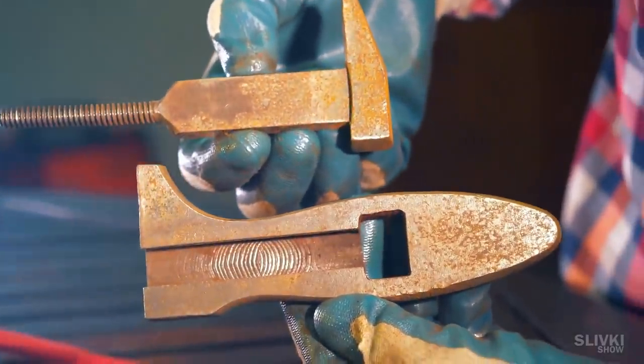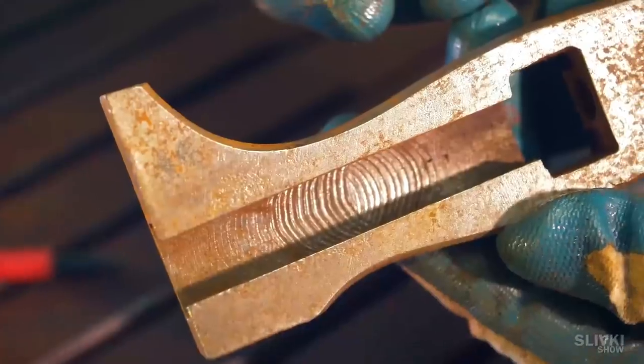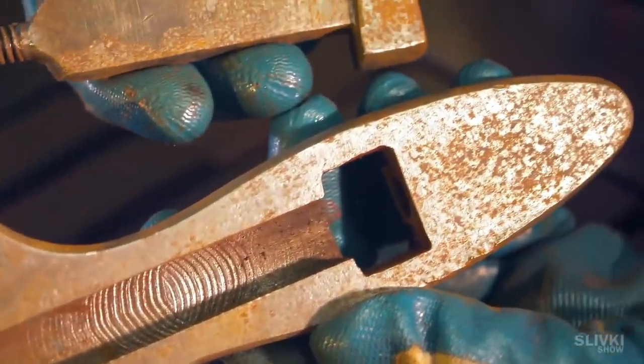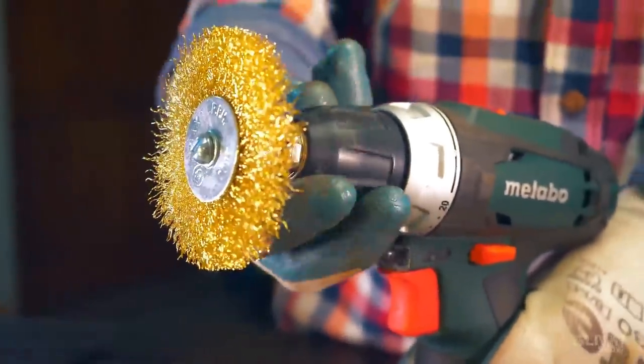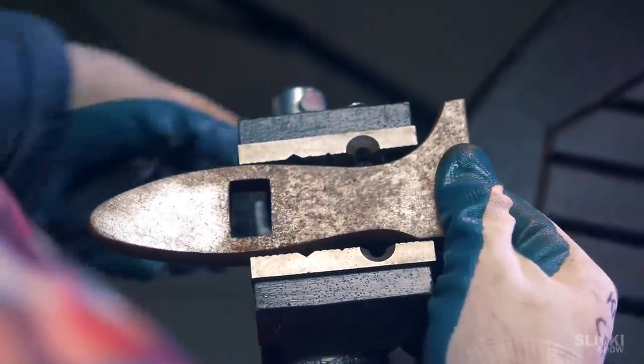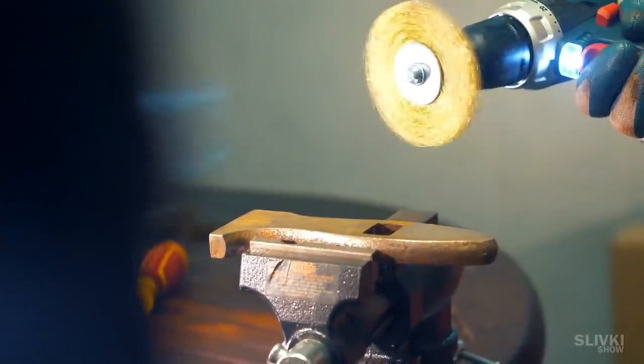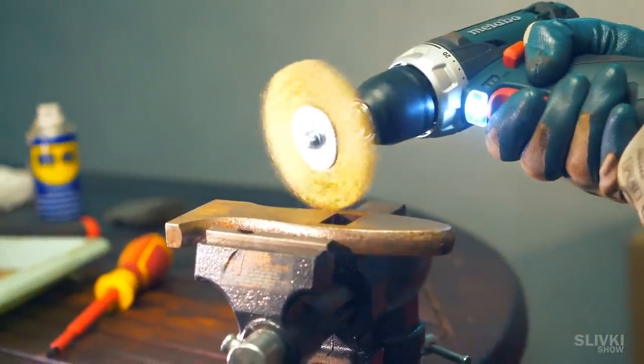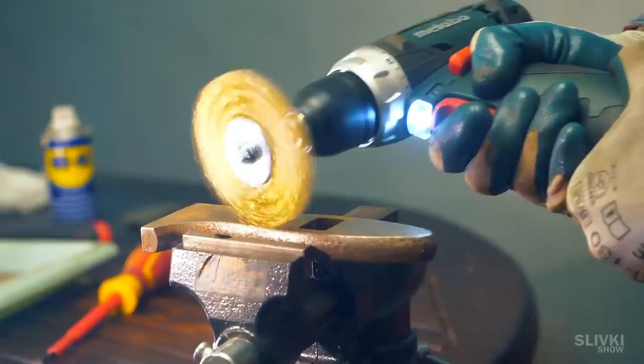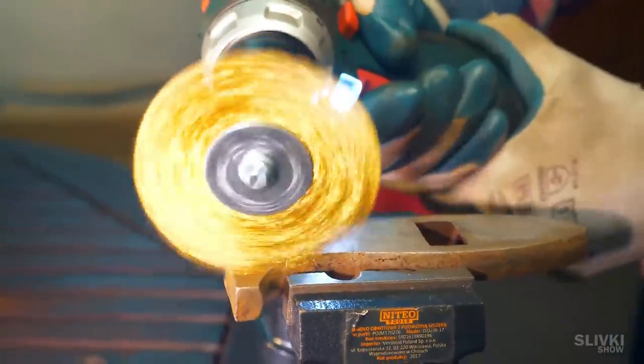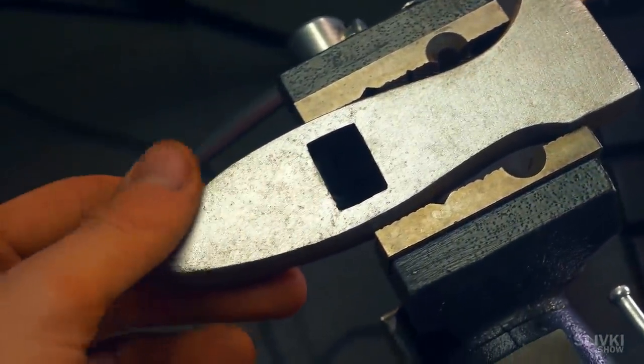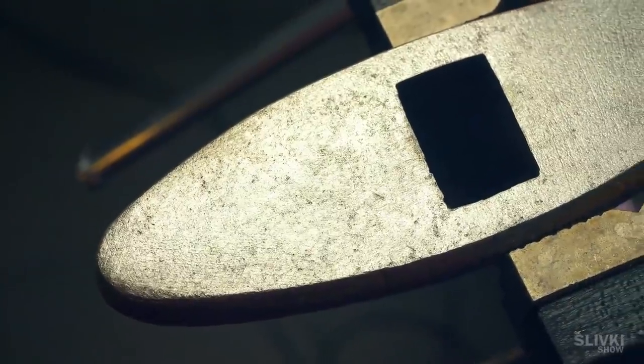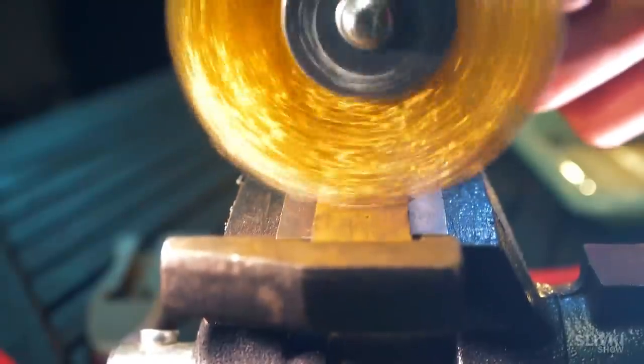Well, the initial cleaning of the wrench from rust is complete and the hand brushes are powerless here. We need to call for heavier artillery. We fasten the base of the wrench in a vice and begin machining. The wires on this wheel are made of very hard metal, so they can fight even very strong rust. But at the same time, especially on delicate parts, you have to be careful with this wheel, because it can scratch the soft metal.